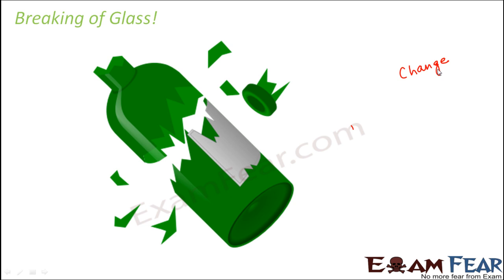But if you look at it in the long run — if you collect all the pieces of glass from your house and community, take them to a factory, you can again create glass bottles. So in the long run it might be reversible, but in the short run it is irreversible. At your level, since you are just starting with the basics of changes, you will consider it as irreversible change because immediately you cannot join the pieces to form the bottle. In higher classes you will learn that since it can be reversed in the long run, reversing is possible — but only in the long run. Looking at the instant effect, it is an irreversible change.